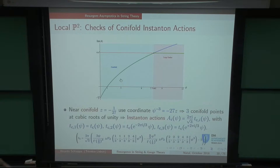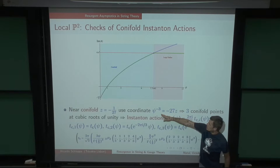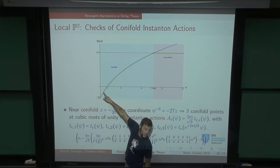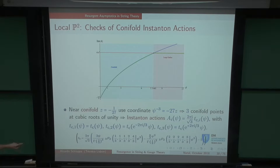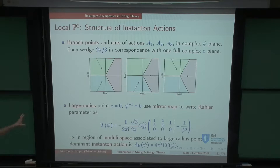The flat coordinate around the conifold is given by a combination of hypergeometrics — that's what it is. It predicts what the instanton action should be. The sub-leading growth of the perturbative (beyond the leading (2G)! growth) should be controlled by this instanton action. I can check this: by taking ratios of F_G at large order I can isolate the instanton action A, and check whether it matches the predicted period at the conifold.